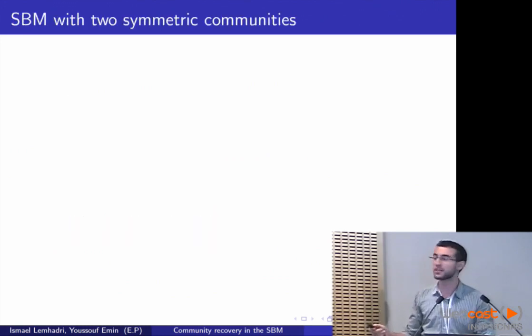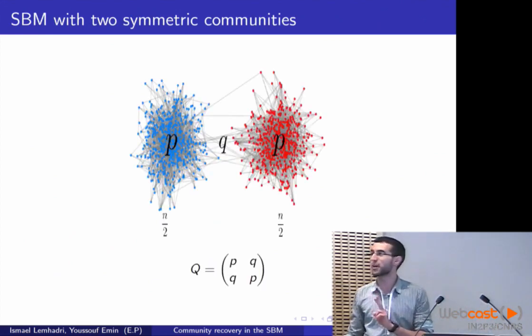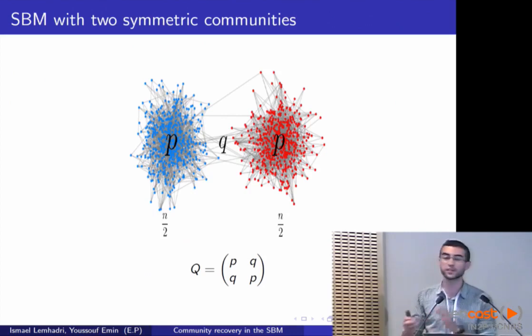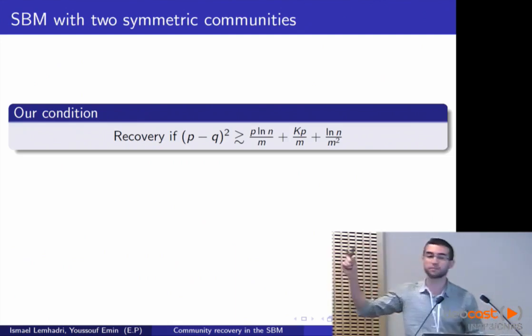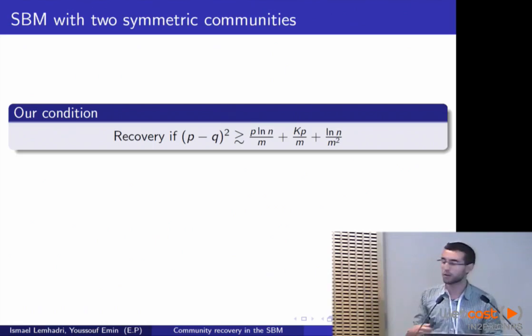So when you have two symmetric communities, you basically are going to have just two parameters. Because you have the intra-community connection, which is going to be the same for the two communities. And then you have the inter-community, which is given by the parameter Q. And obviously you don't know what P and Q are. You just assume that there are two communities. And in this example, our condition translates to this one. So here P and Q are the probabilities and number of individuals. K is a number of clusters, so it's just going to be two. And M is going to be N over K, so N over two. And so I'm showing this condition and I like to compare it to the information theoretic condition, which tells you when is recovery possible, no matter what algorithm you use.